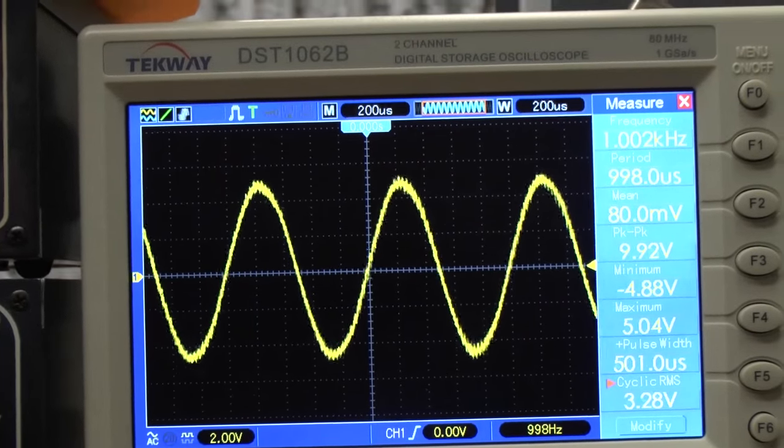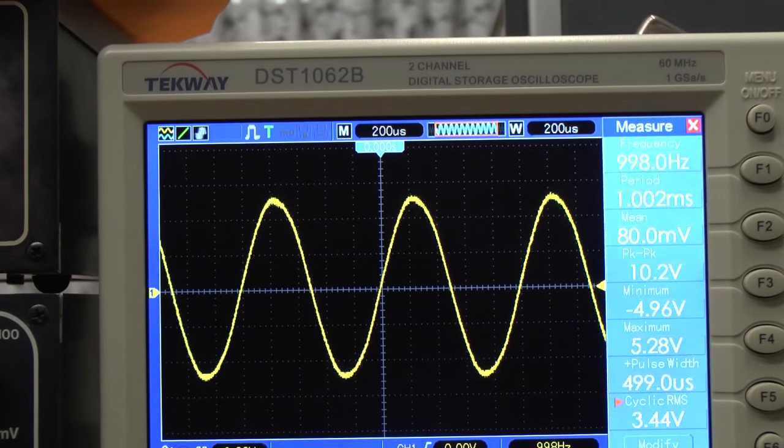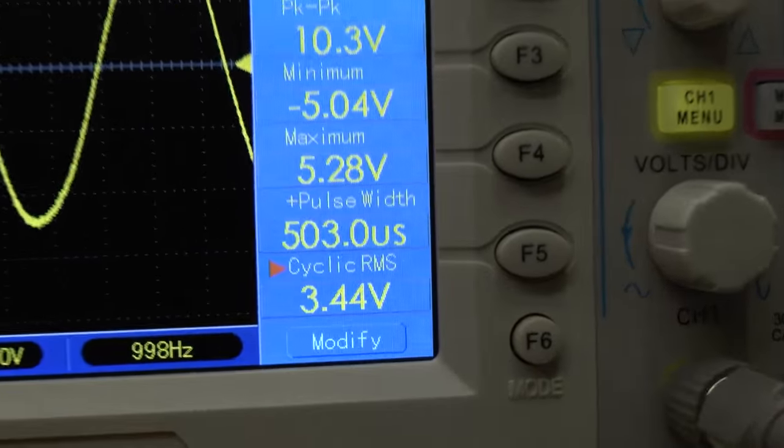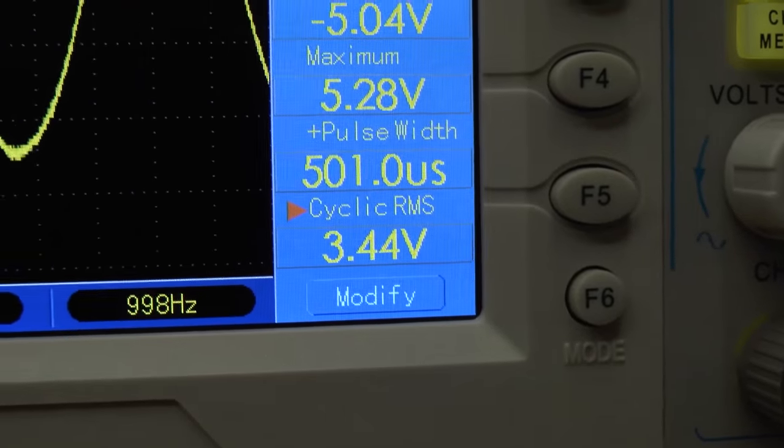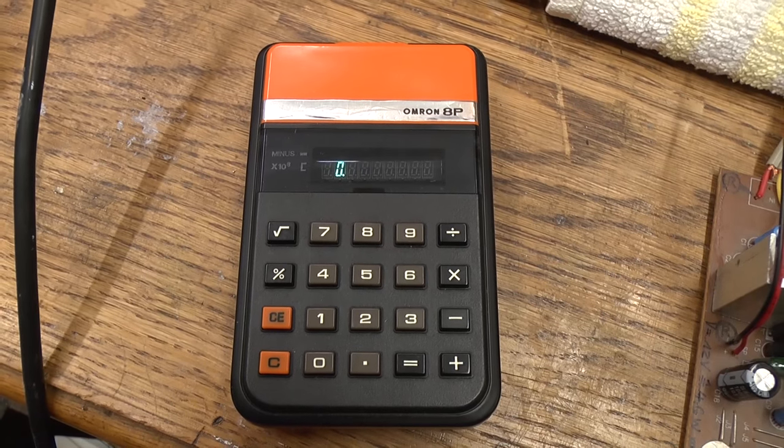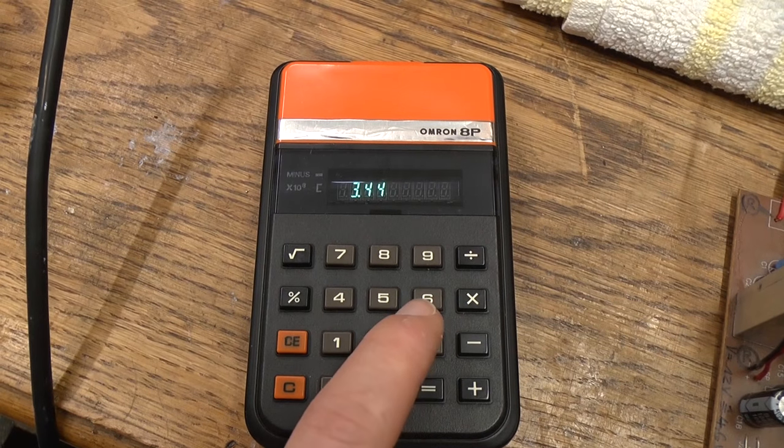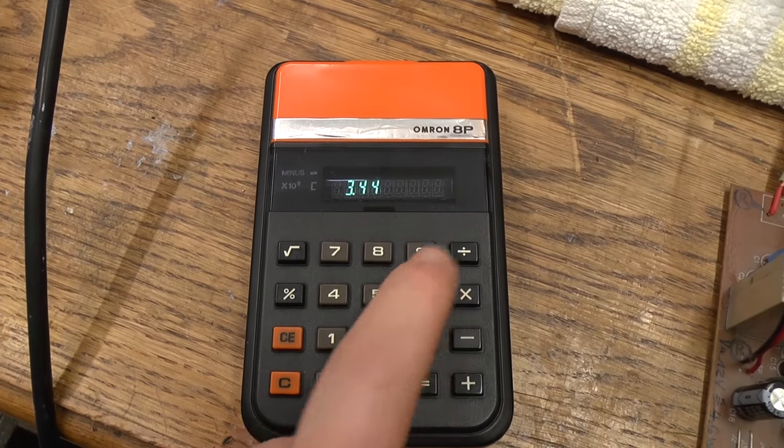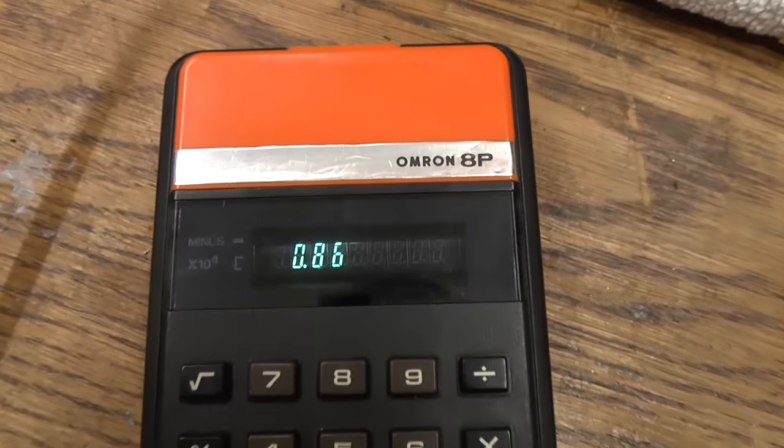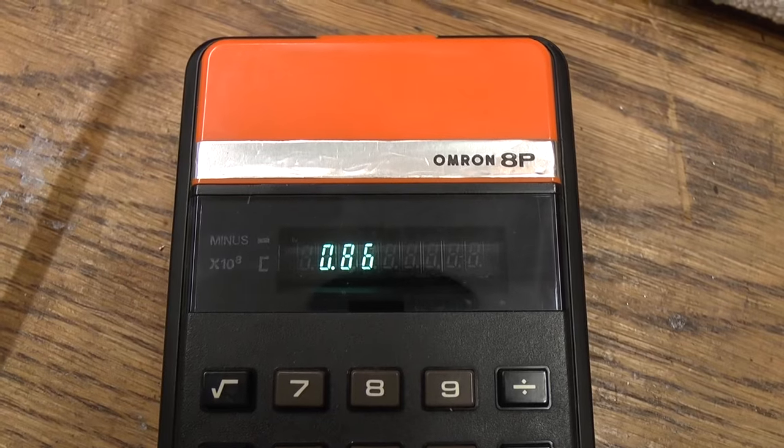So if I adjust this so that the signal is not distorted, we're getting 3.44 volts RMS. To get the RMS output power, we enter this into the pocket calculator. 3.44 volts divided by 4 ohms. That is no more than 860 milliwatts.